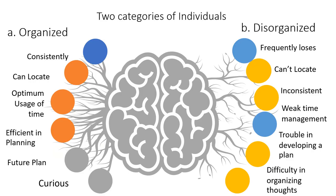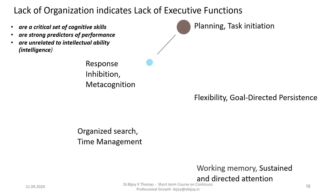Organizational skills include soft skills and technical skills, which are brain-based. They have an interactive effect on people and one's profession, and improve work productivity. It is a process of building habits and leads to innovative ideas or trends. Based on the presence or absence of these skills, individuals are divided into two categories: organized individuals and disorganized individuals. Some characteristics of organized individuals are they are consistent in their tasks, can locate and use resources efficiently, are efficient in planning, aware of future goals, and curious about innovation. Disorganized individuals are inconsistent in their work, weak in time management, and face difficulty in developing a plan and organizing their thoughts. Thus, lack of organizational skills indicates a lack of executive functions.